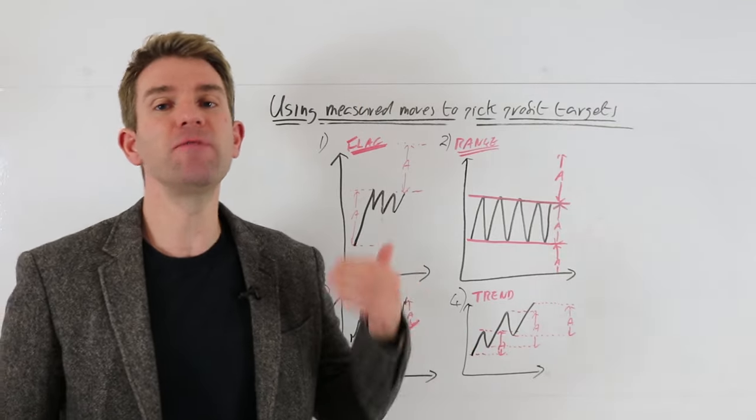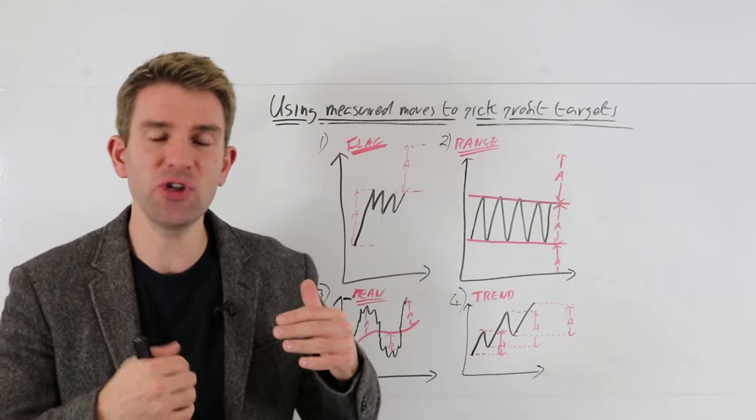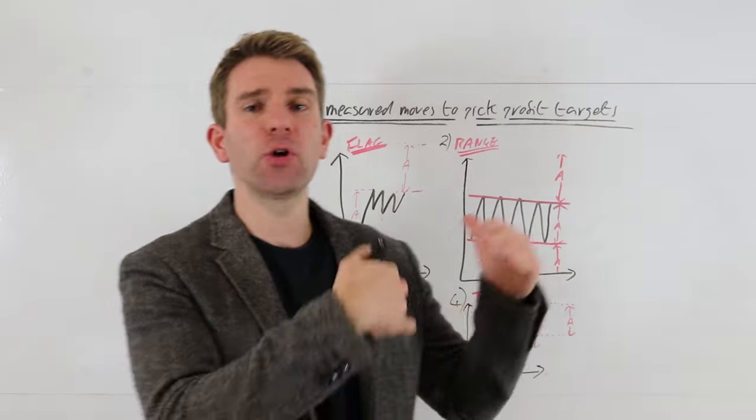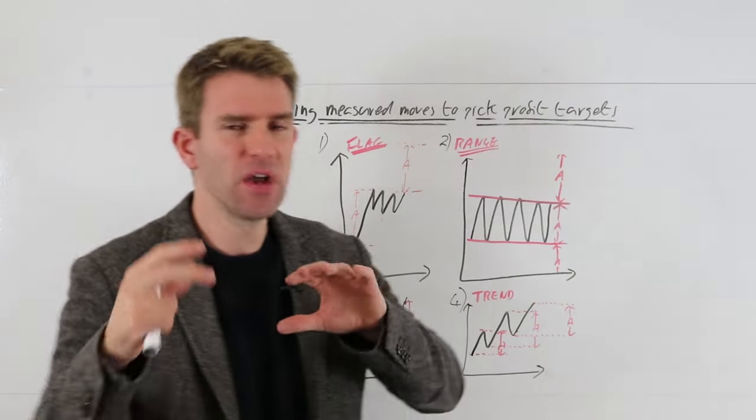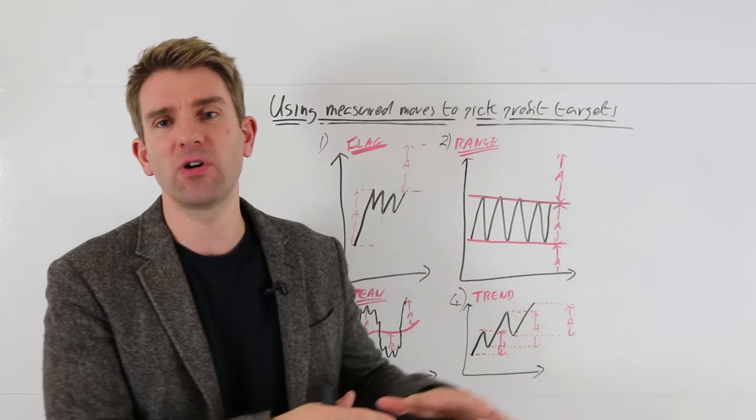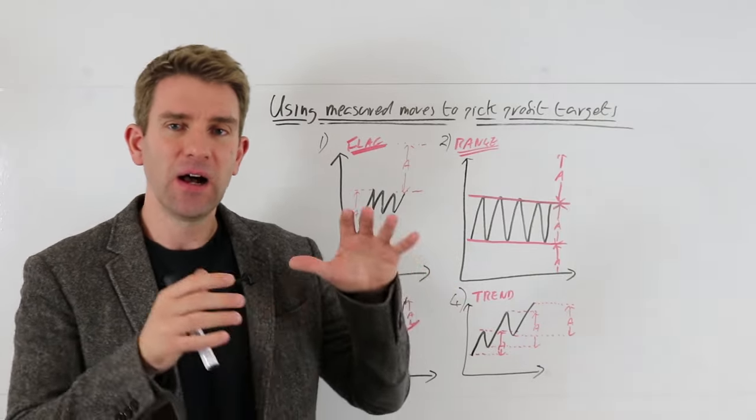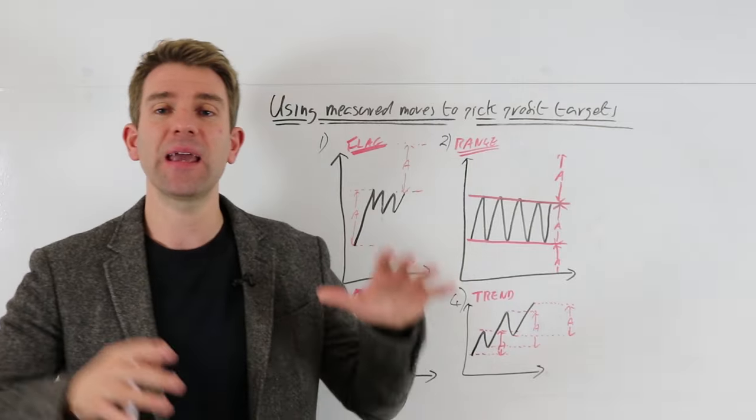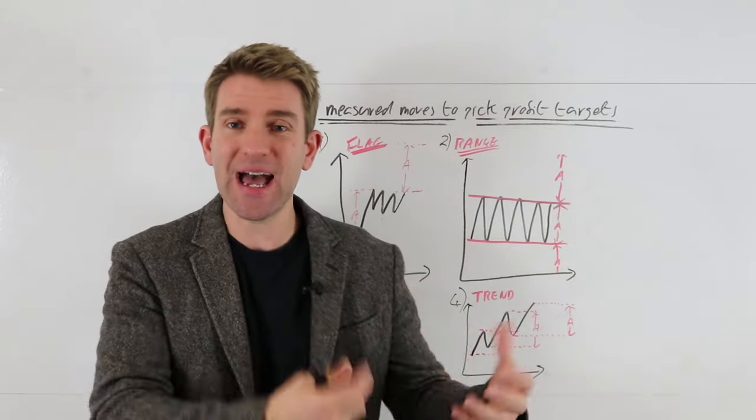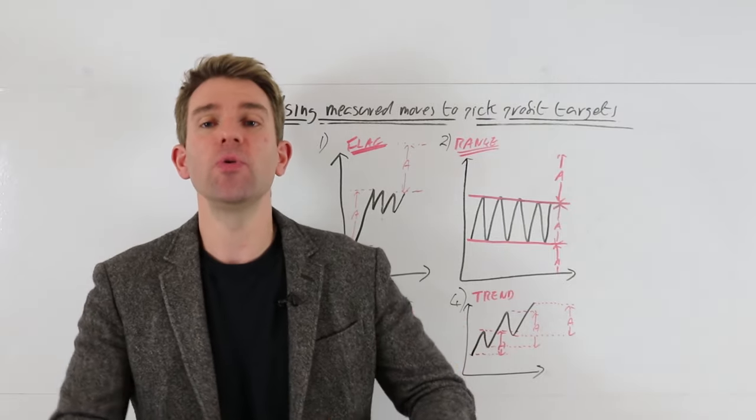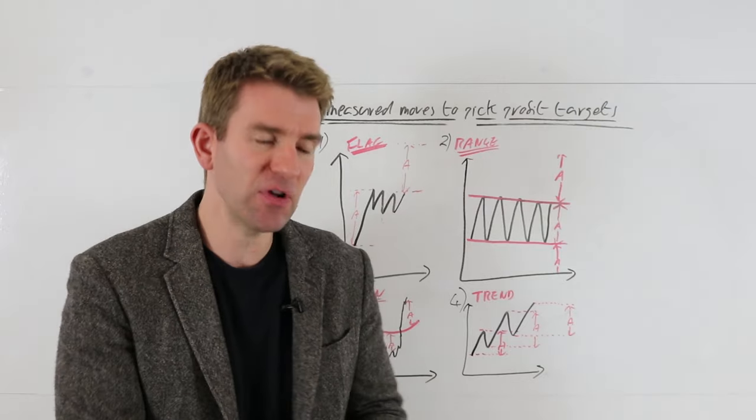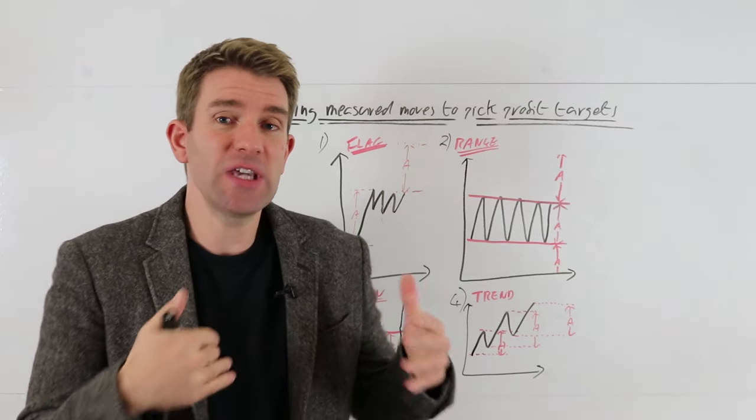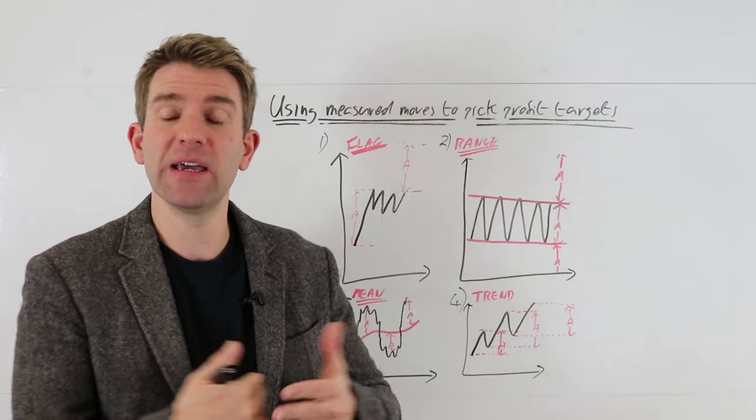And so a measured move to me is using the current conditions to extrapolate and have a good estimate on where the market could go. Now, some people use complicated formulas and all sorts of in-depth stuff about this, but I'm a pure price action guy. I like to see what the market's been doing. And I like to say, what are the conditions? What's the volatility like? What's the range been like? And how can I use that information and evidence to superimpose onto a future? Of course, we never know what's going to happen. It's why risk management trumps everything. But sometimes, guessing where we're going to put our profit target is challenging.